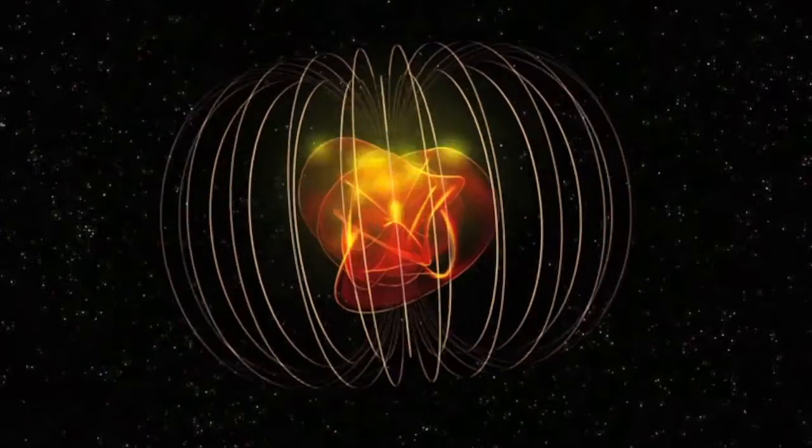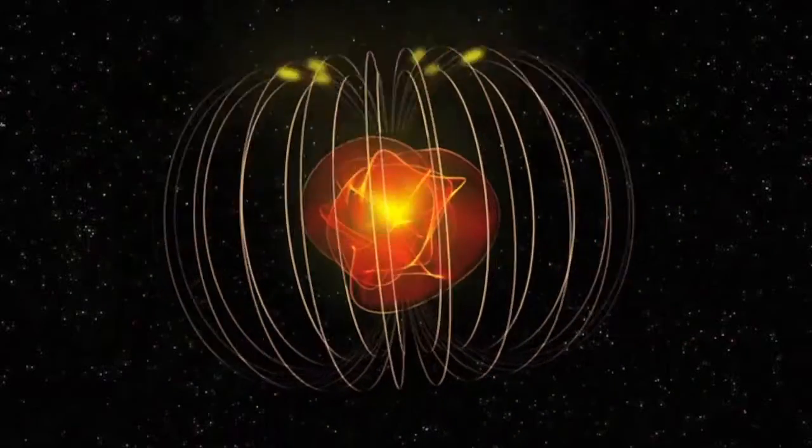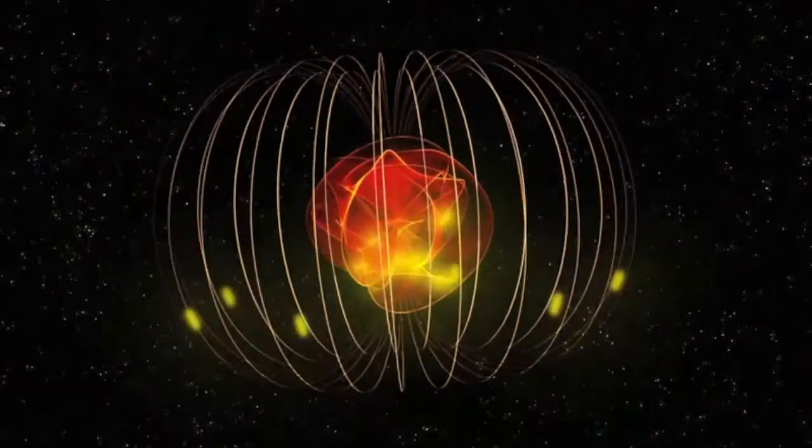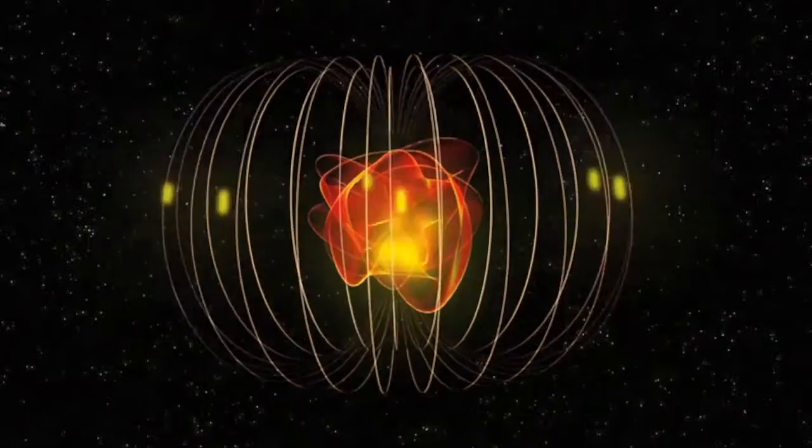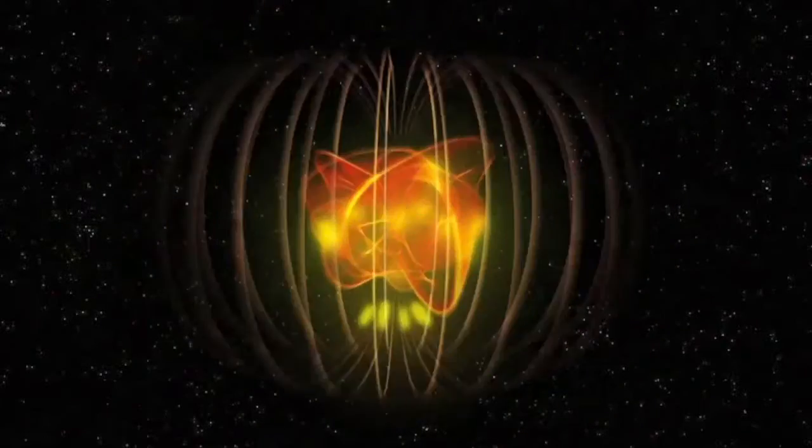Magnetars emit bright x-rays and have the most intense magnetic fields known in the universe. Pulsars, with much lower magnetic fields, pulse radio waves as they rotate rapidly.